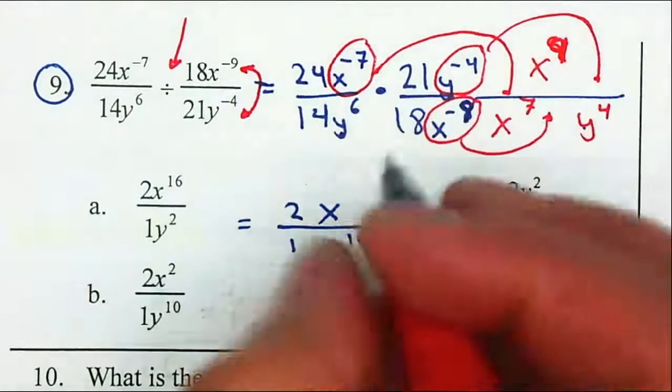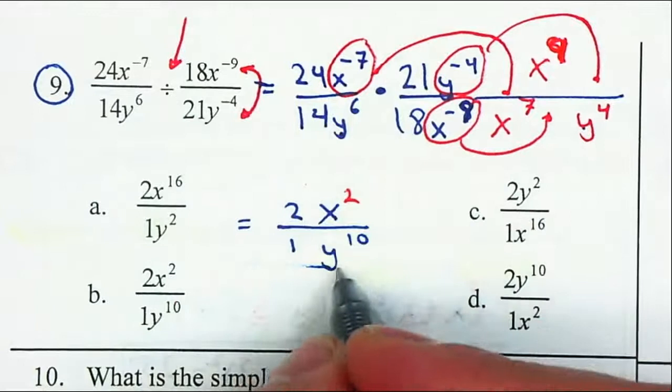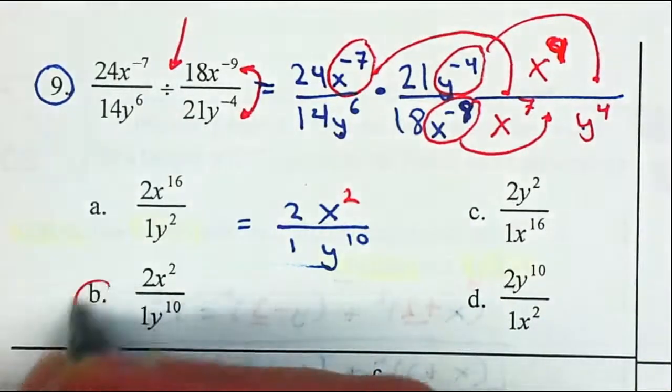So therefore there's a square in here. So now x squared and y to the 10th. That should be letter B.